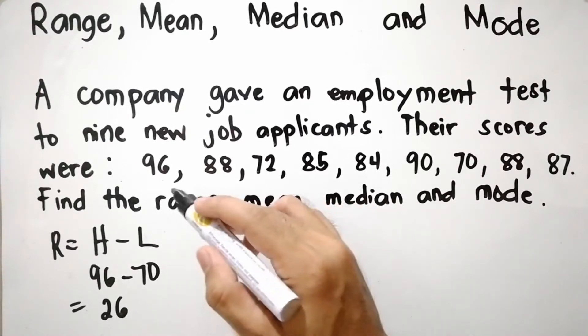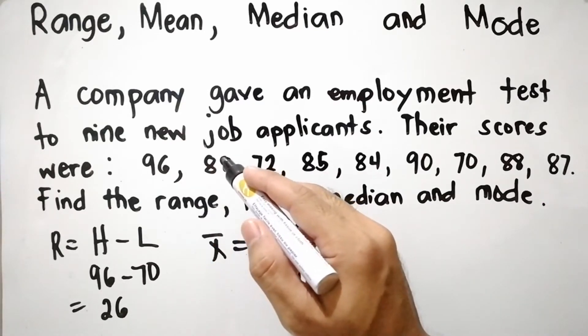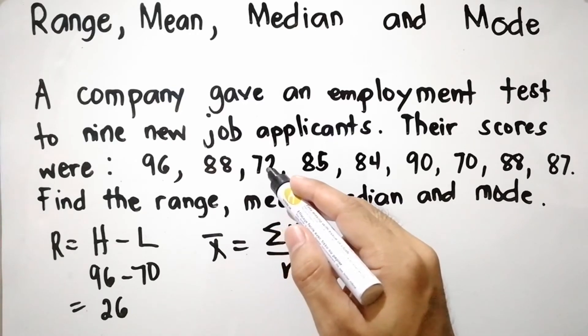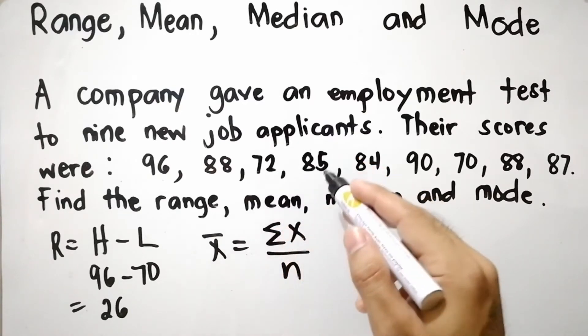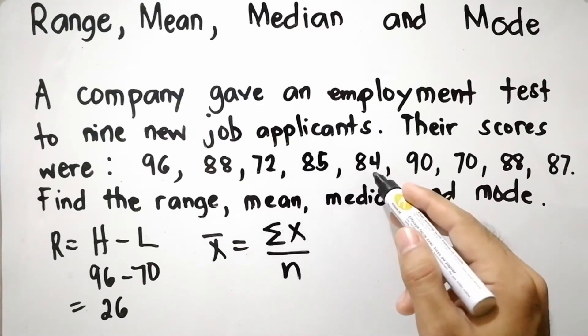Summation of X means we need to add all these scores. So 96 plus 88, that is 184, plus 72, that is 256, plus 85, that is equal to 341.